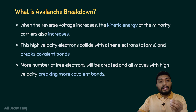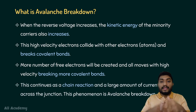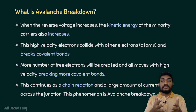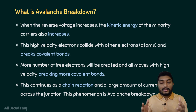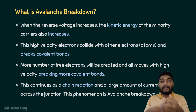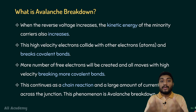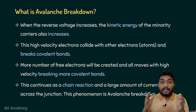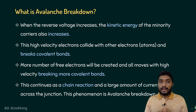More number of free electrons will be generated by the breakage of this covalent bond, and this process will continue as a chain reaction. The newly generated electrons also travel at high velocity and break more covalent bonds, generating even more electrons. So, this will continue as a chain reaction. This phenomenon is actually called avalanche breakdown.